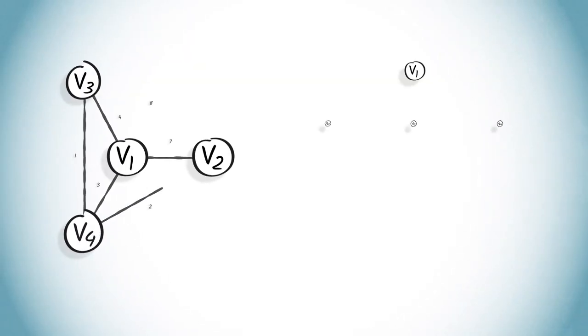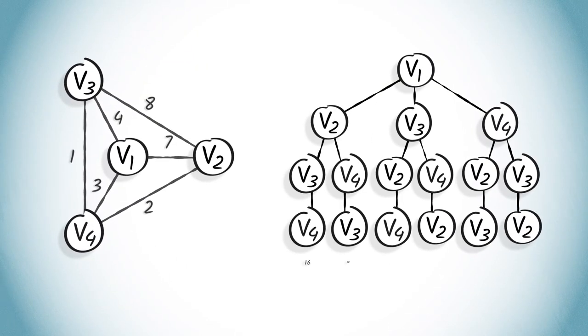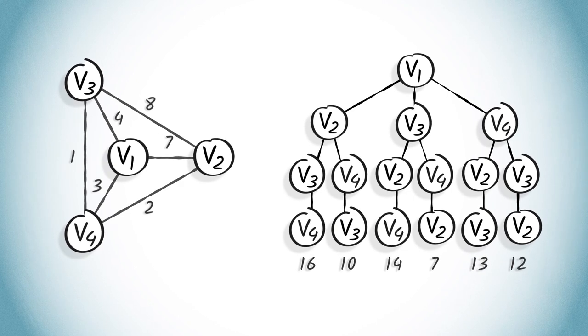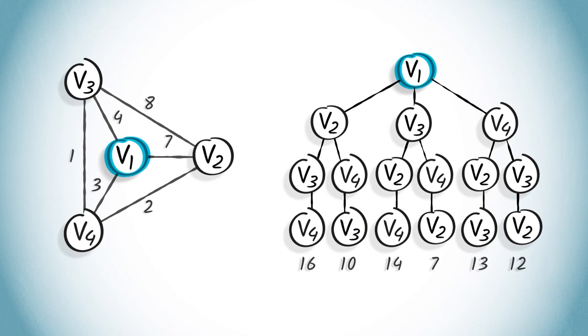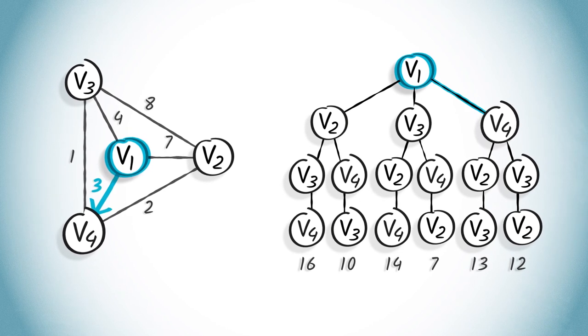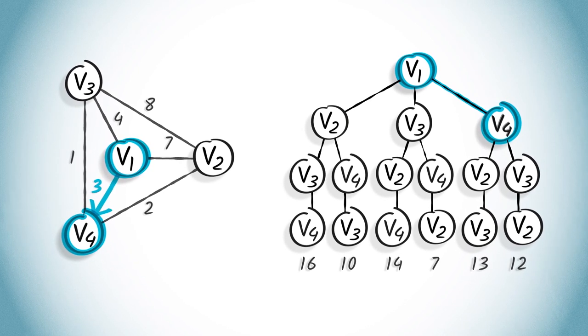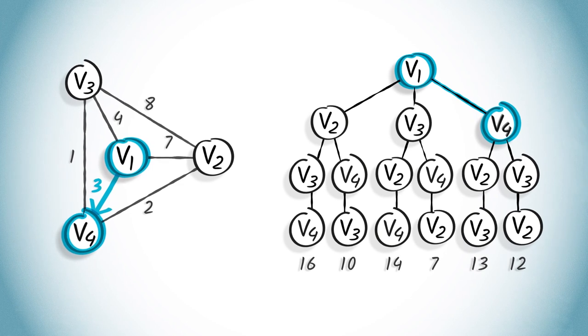Take the following graph as an example, for which we explore all possible paths. Let us put the greedy algorithm into practice. Starting from vertex V1, we will first go to V4 because the corresponding edge is the shortest of all possibilities.